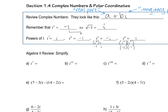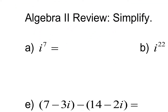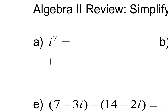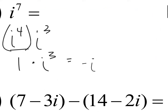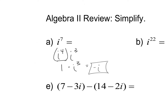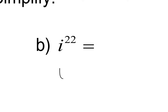Those are the first four powers of i. To simplify something like i to the seventh, the goal is to rewrite it as i to the fourth times something else. I need four plus three to get seven, so it's i to the fourth times i to the third. Since i to the fourth is 1, and i to the third is negative i, this whole thing simplifies to negative i.